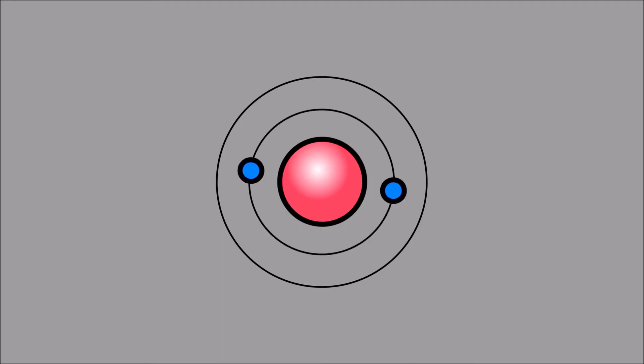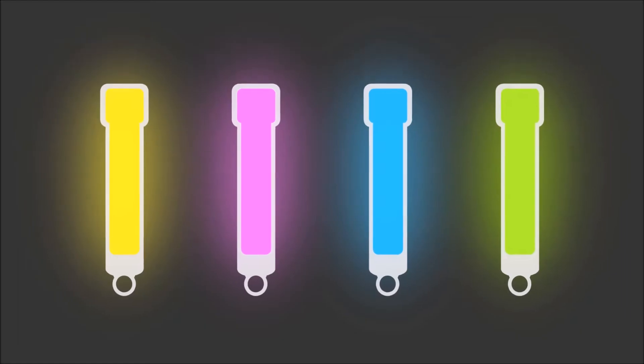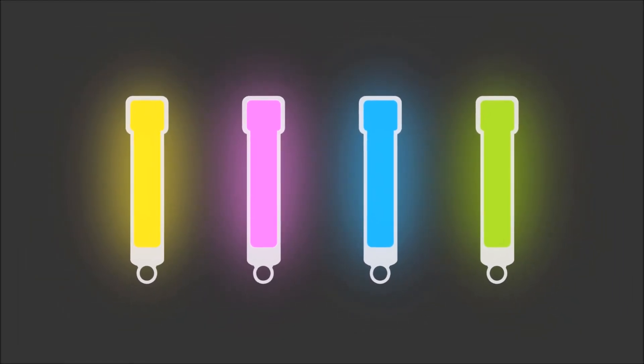During a chemiluminescent reaction, the electrons get excited and jump to a higher shell. The electrons then return to their normal or ground state, releasing light photons. And this is how the sticks are able to glow!